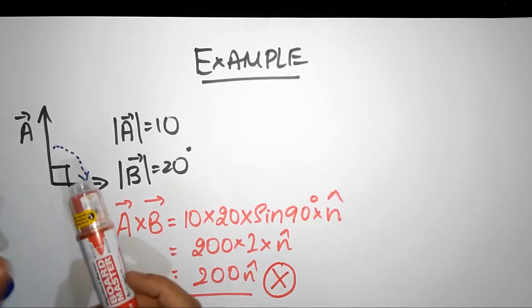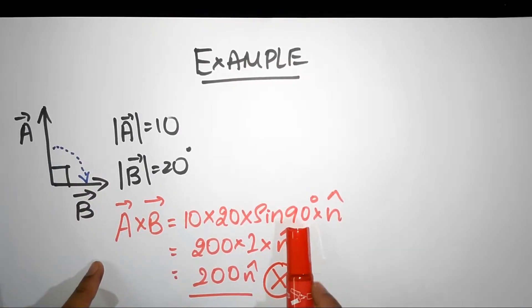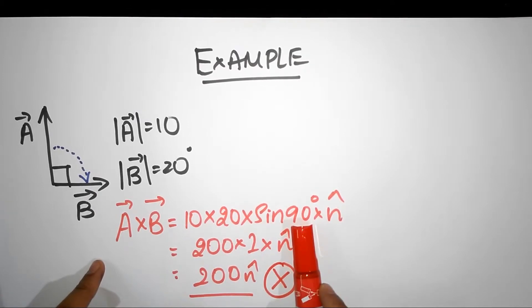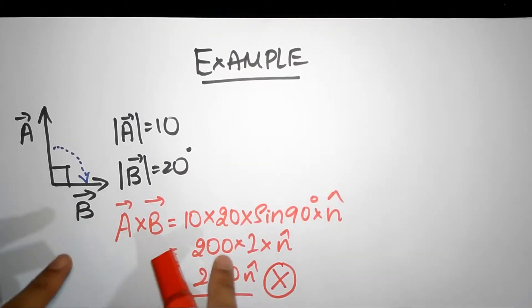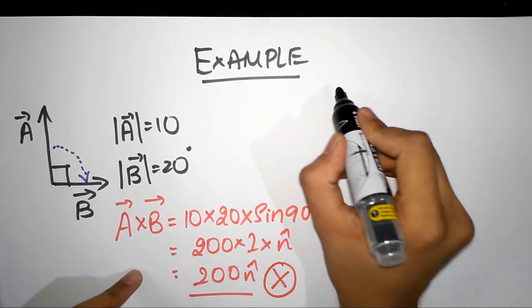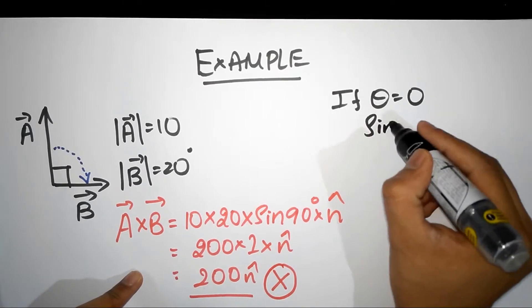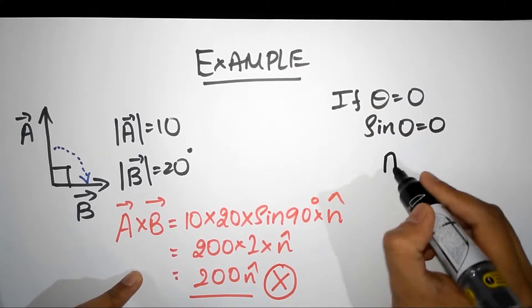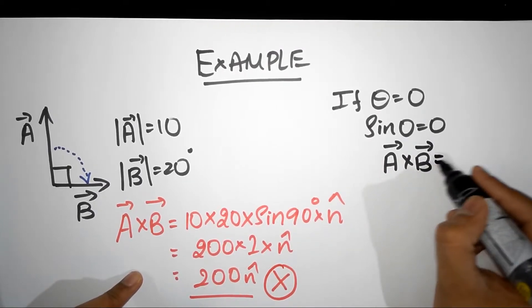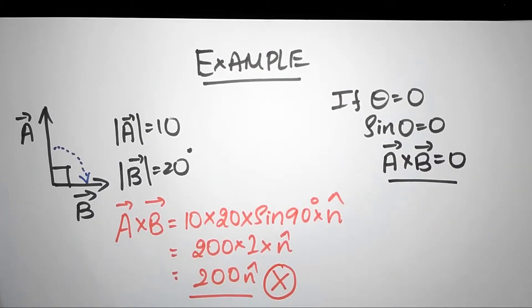What would happen if the angle between A and B reduced? As the angle decreases, sine of that angle also decreases, so the cross product would reduce. What would happen if the angle was 0 degrees? Sine 0 is 0, hence A cross B would also be 0. Cross product gives you exactly the opposite result compared to dot products. Dot product was maximum when the two vectors were parallel, when the angle was 0, but cross product is minimum — it's 0 — and it's maximum when the angle is 90 degrees.